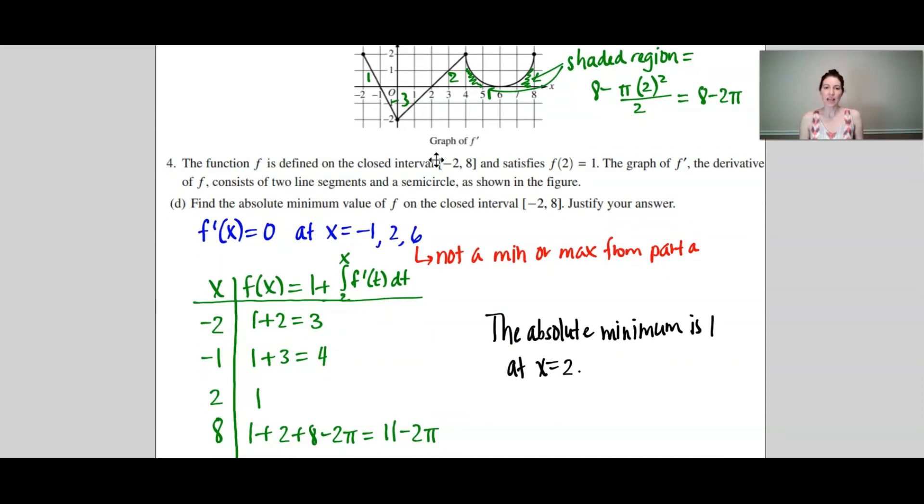So the integral from 2 to negative 2. Remember, I am working backwards. So even though forwards would be negative 2, going backwards would be an area of 2. So I get 3 for that one. Then here, I would take 1 plus the integral from 2 to negative 1. So once again, I'm working backwards. That'd be a positive 3. So I get a value of 4 for f of negative 1.